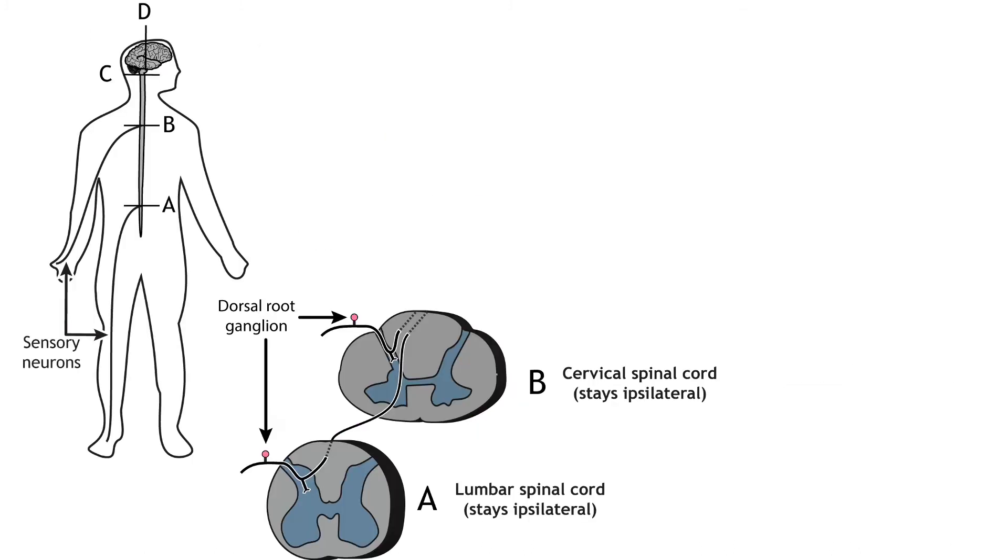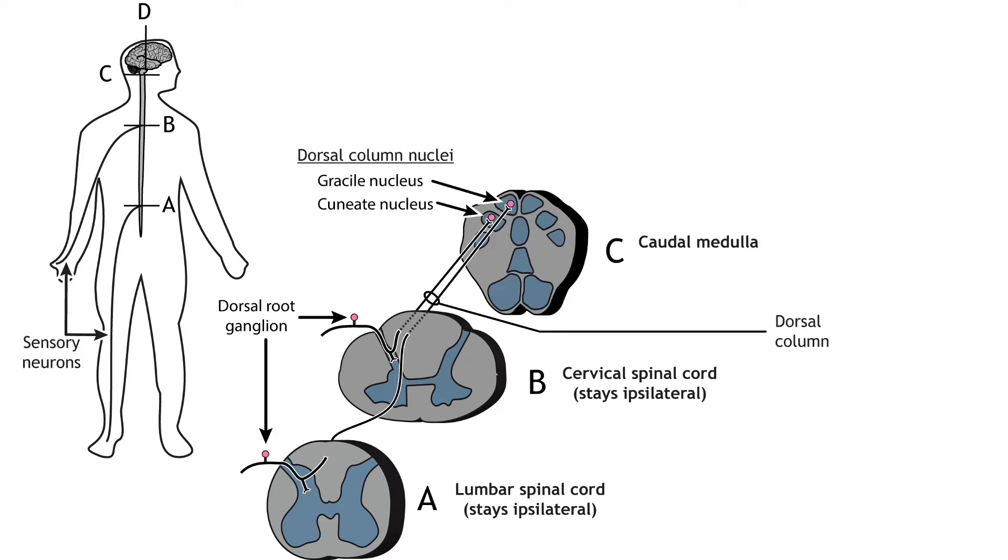Primary afferent sensory fibers have their cell bodies located in the dorsal root ganglion, a structure that lies just outside of the spinal cord. The axons of these first-order neurons enter the ipsilateral dorsal side of the spinal cord. Some axon collaterals terminate in the spinal cord and are important for reflexes. The main axon branch ascends the spinal cord toward the brain via the dorsal column, terminating in the dorsal column nuclei located in the brain stem.